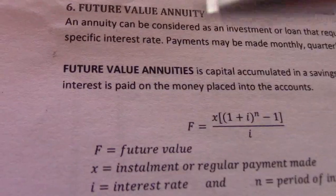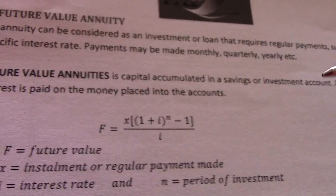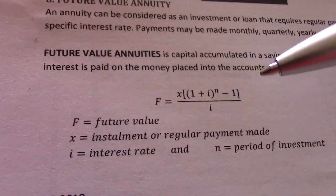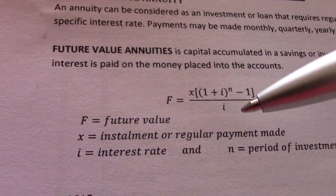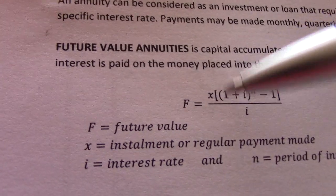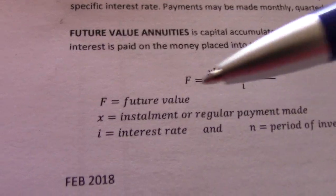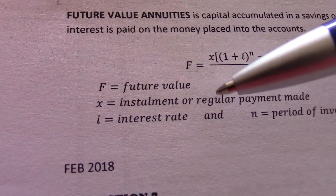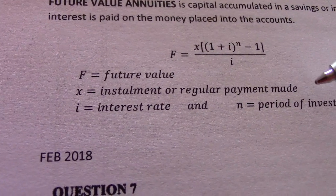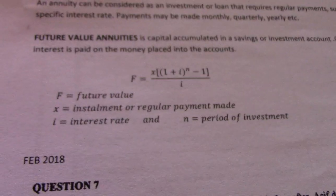Don't confuse it with hire purchase. Future value annuities is capital accumulated in the savings or investment account, with compound interest paid on the money placed into the account. The formula that governs future value annuity — and this is the same formula we use in real life — is: F = X × [(1 + i)^n − 1] / i. F represents the future value, X is the installment or regular payments made, i represents the interest rate, and n is the period of investment.